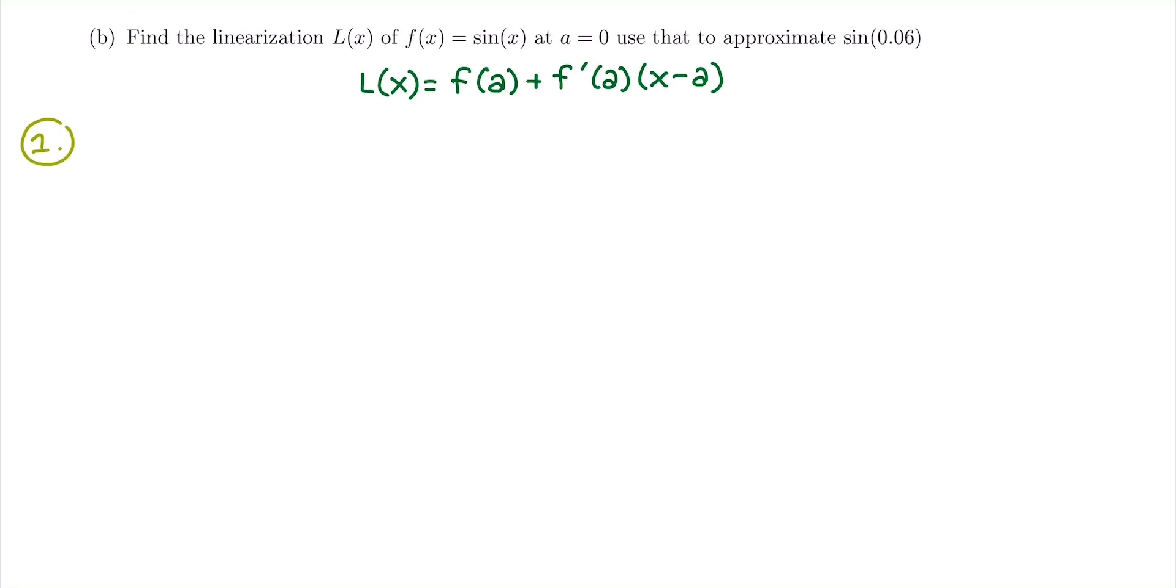So plugging into our linear approximation formula, the first piece that we find is plugging in f of a, which in this case is 0. We're going to take sine of 0, and sine of 0 is just 0. So we have our f of a.